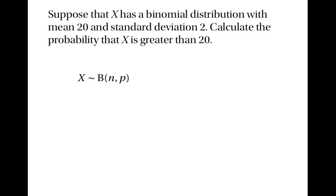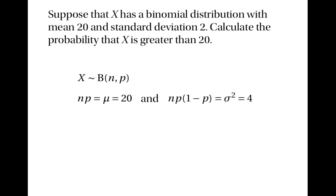The question tells us that the mean is 20, and we know that the mean is calculated by multiplying n and p. So it must be that n times p is equal to 20. In the same way, it must be that np times 1 minus p is equal to the variance, which is 2 squared, i.e. 4. So np times 1 minus p is equal to 4.